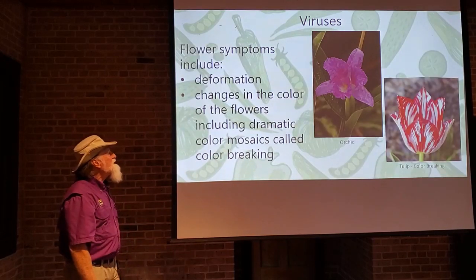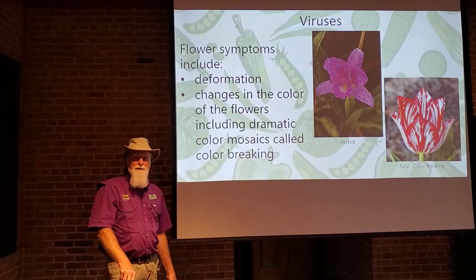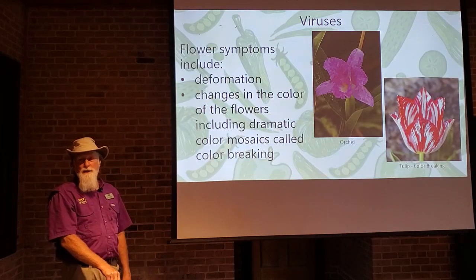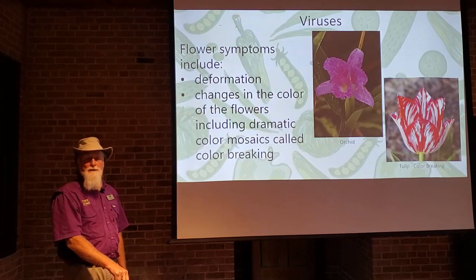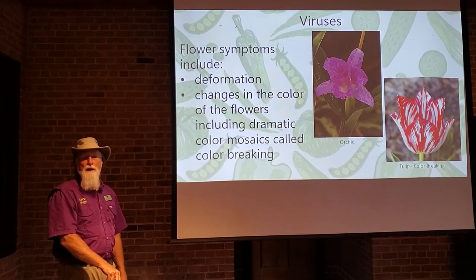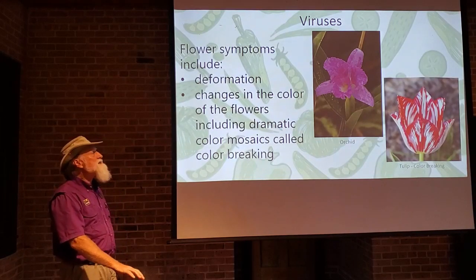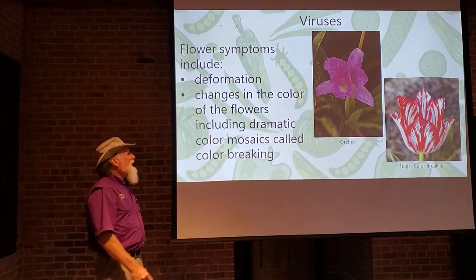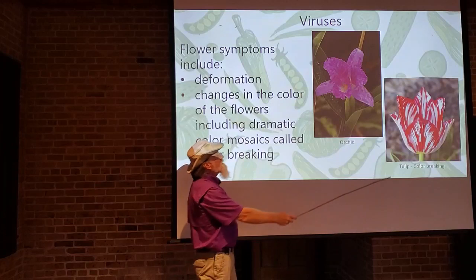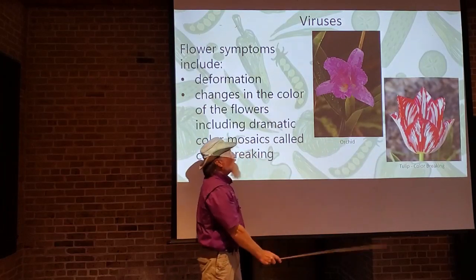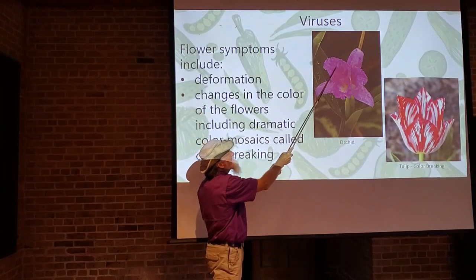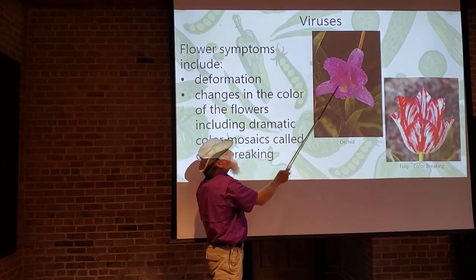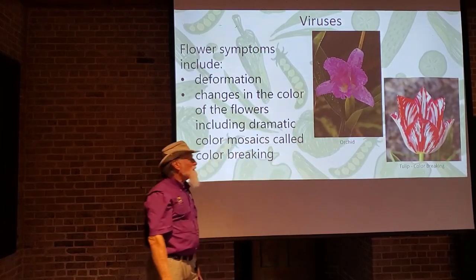Symptoms on flowers would be deformation — they'd be gnarled, sometimes producing extra petals, or petals turning into green sepals, changing the whole form and structure of the flower. You can also have dramatic changes in flowers; for example, this orchid showing discoloration on the petals is caused by a virus.